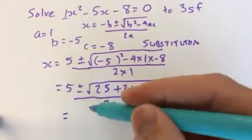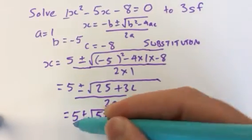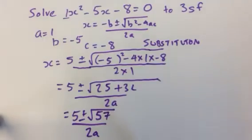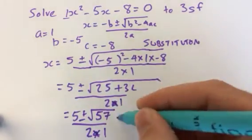Still all over 2a. Yeah, and then you can add those two together. So you get 57 underneath the bracket over 2, because you can times 2 and 1. Because a is 1, so 2 times 1.